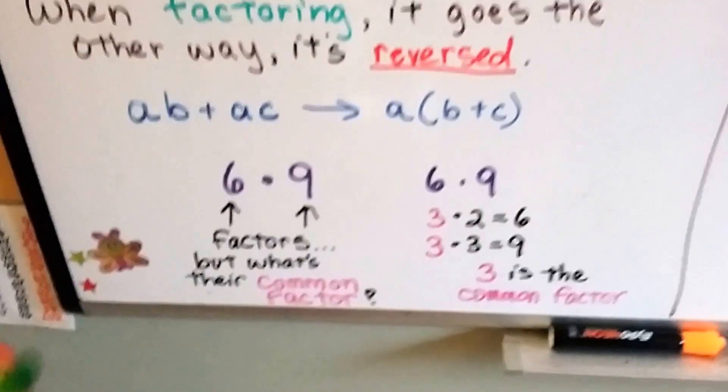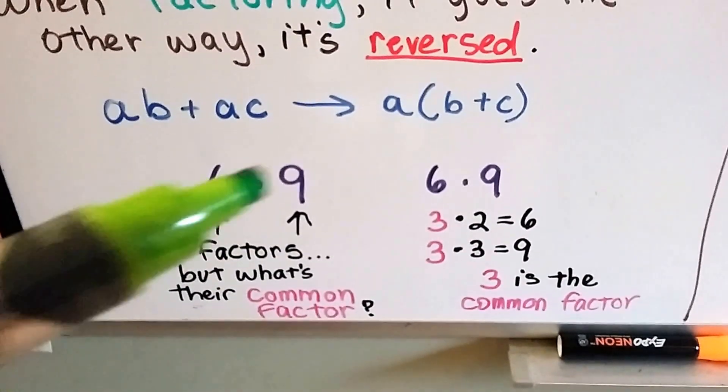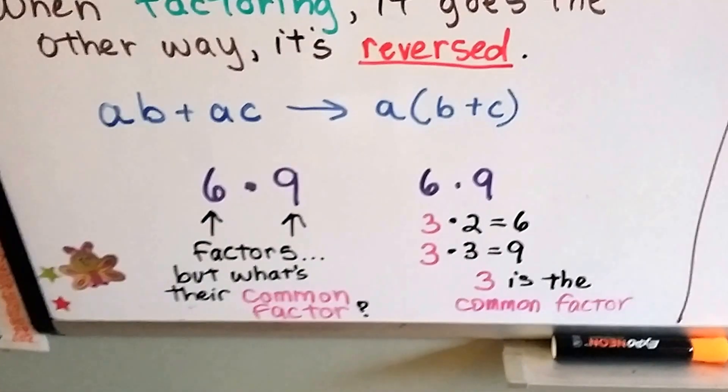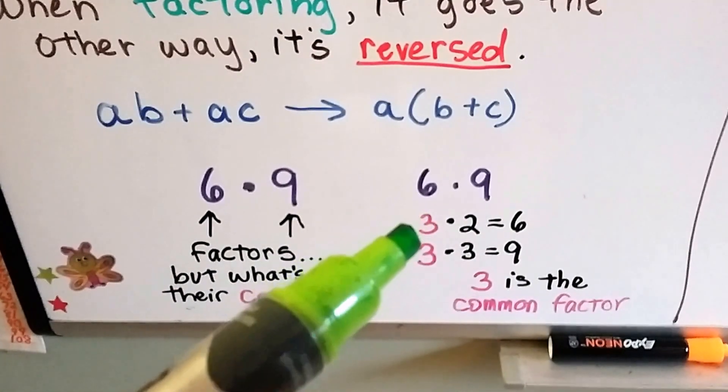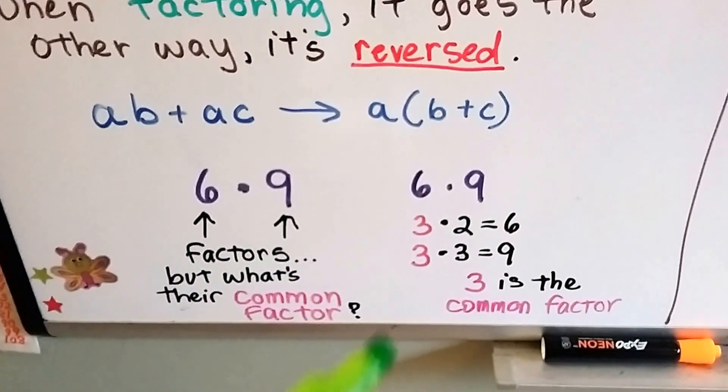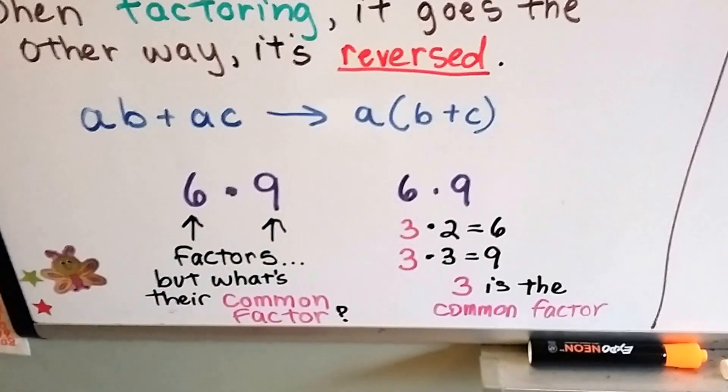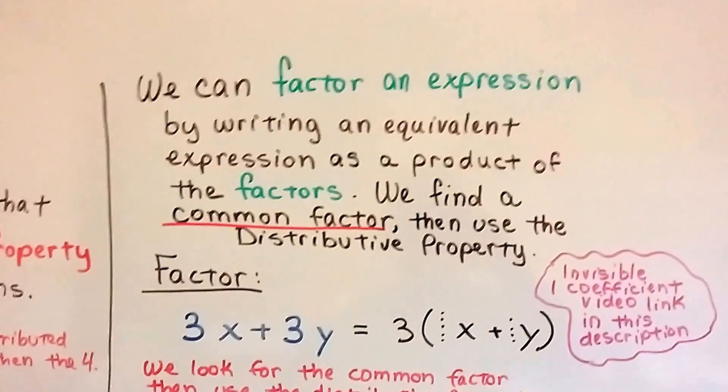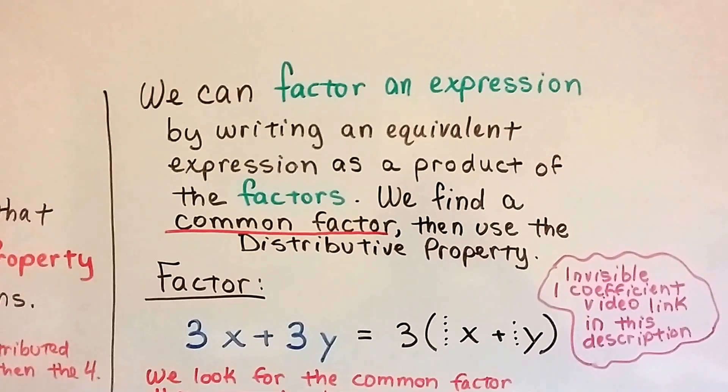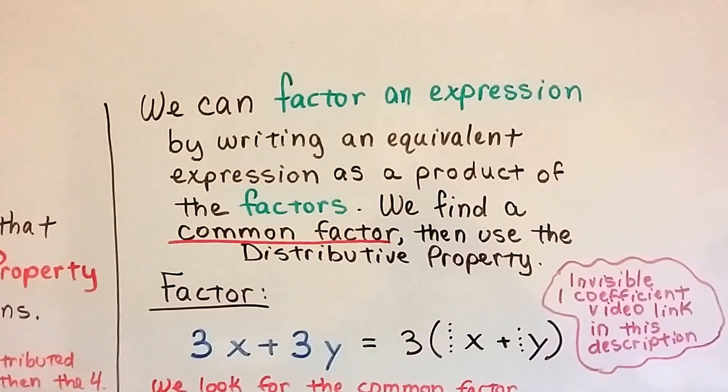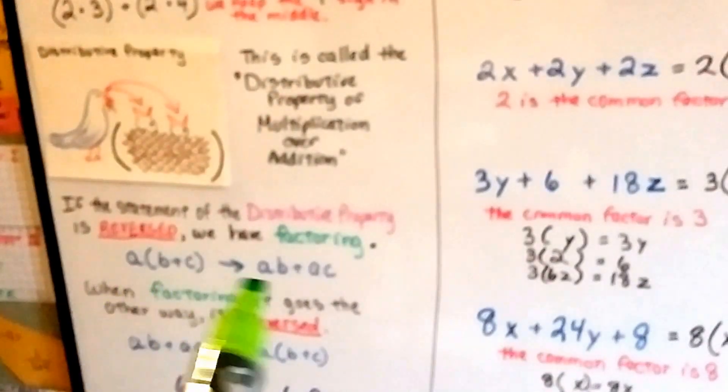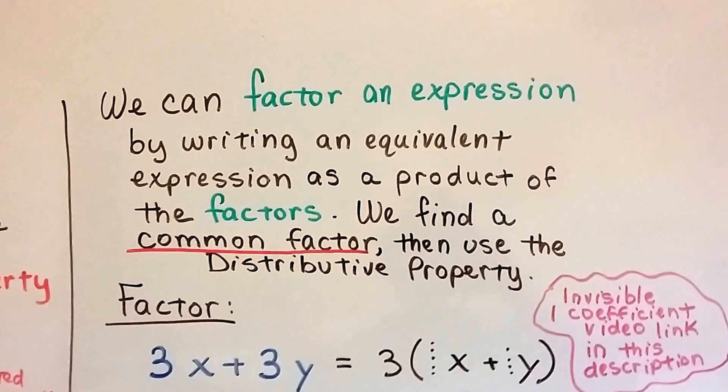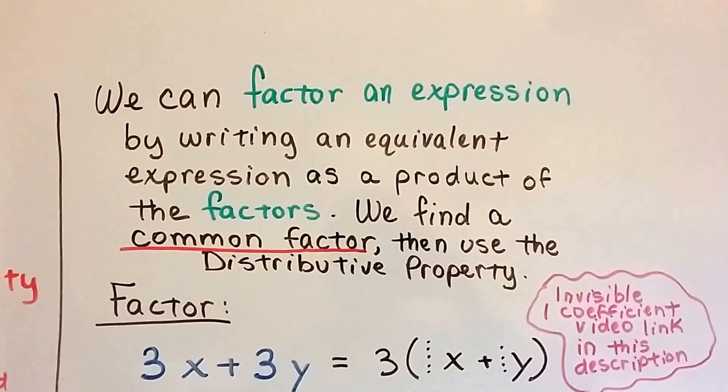So look at it this way. We know that 6 and 9 are factors of 54, because 6 times 9 is 54. But what factors do they have in common? Well, 3 times 2 is 6, and 3 times 3 is 9. So 3 is the common factor for these two numbers. That's what we're going to use to do this. We can factor an expression by writing an equivalent expression as a product of the factors. These two are equivalent expressions. And that's what we're going to do. We find a common factor and then use the distributive property.